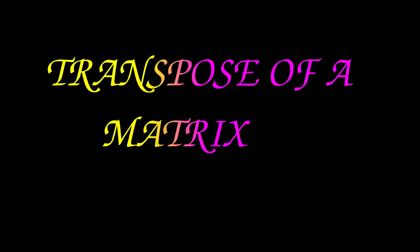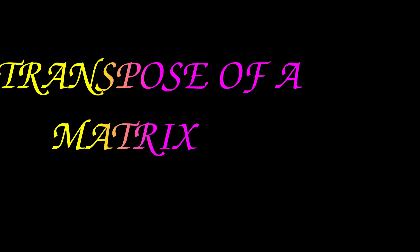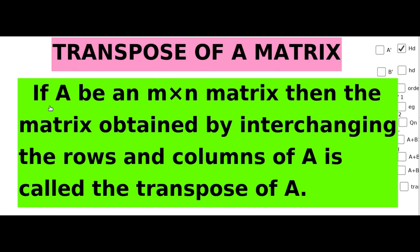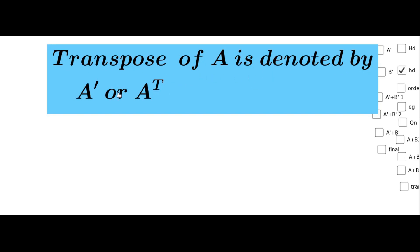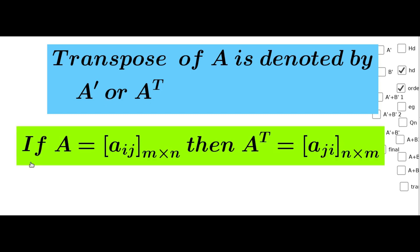Hi students, today we are going to learn about the transpose of a matrix. If A is an M by N matrix, then the matrix obtained by interchanging the rows and columns of A is called the transpose of A. Transpose of A is denoted by Aᵀ. If A equals matrix Aij of order M by N, then Aᵀ equals matrix Aji of order N by M. That is, the element at the i-th row j-th column becomes the element at the j-th row i-th column.